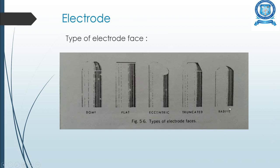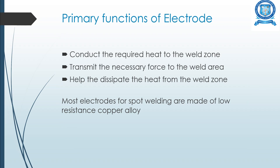There are different types of electrodes depending on their face shape: flat face, dome shape, aesthetic shape, truncated, and radius type electrodes. The primary functions of the electrodes are to conduct the required heat to the weld zone, to transmit the necessary force to the weld area, and to dissipate heat from the weld zone. Most electrodes used in spot welding are made of low resistance copper alloy.